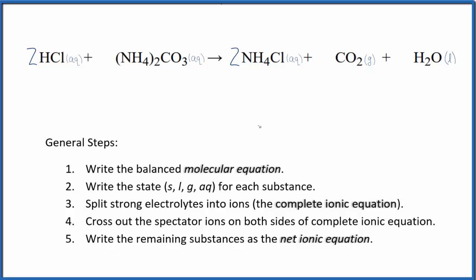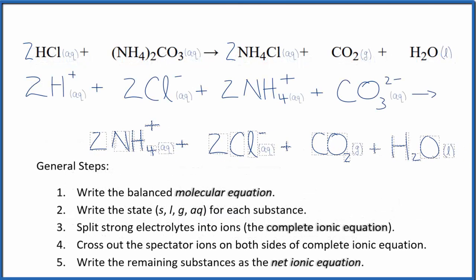So we have the states for our net ionic equation. Now we can split the strong electrolytes into their ions, and that gives us the complete ionic equation. This is the balanced complete ionic equation.